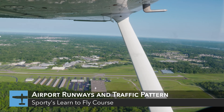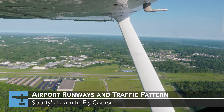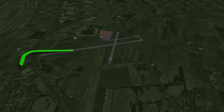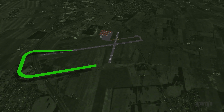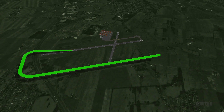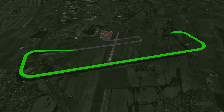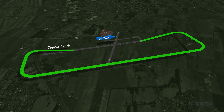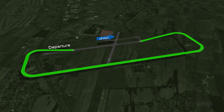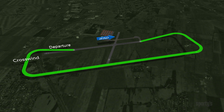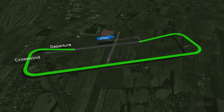Before moving on, let's go over the airport traffic pattern or flow of airplanes around the airport. We'll begin by identifying the various parts or legs of a left-hand traffic pattern. A left-hand pattern is considered standard and should be used unless specified otherwise for an airport. The departure leg is the direction the airplane is flown on takeoff. The airplane is on the crosswind leg when it's flown at a 90-degree angle to the landing runway and off its takeoff end.